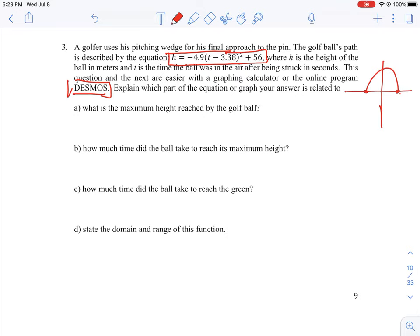First, we have our equation h equals negative 4.9 times x minus 3.38 squared plus 56. This gives us something easier to work with when we type it into Desmos because we're used to using values of x and y instead of h and t. But t is equivalent to your horizontal axis and h is equivalent to the vertical axis.